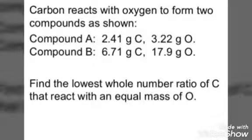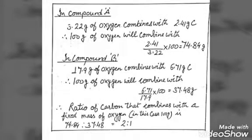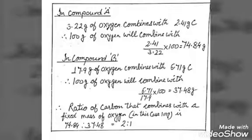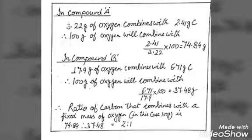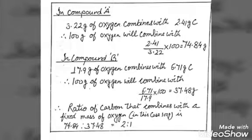We make the mass of oxygen constant. So in compound A, 3.22 grams of oxygen combines with 2.41 grams of carbon. So 100 grams of oxygen will combine with 74.84 grams of carbon.